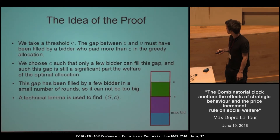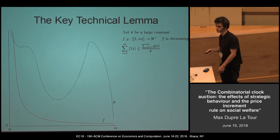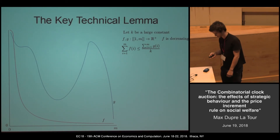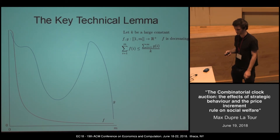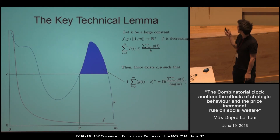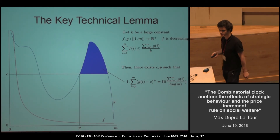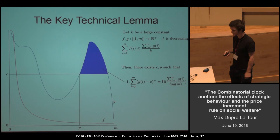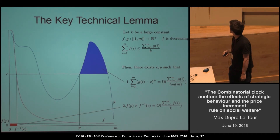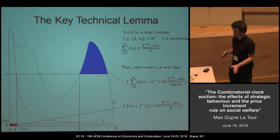This is done using a technical lemma that may be interesting on its own — it is purely analytical. We have two functions F and G such that F is decreasing and the sum of F is at most a K-fraction of the sum of G. The lemma states there exist a pair (C, P) such that the sum of G minus C from P to M is at least a log fraction of the whole sum of G, and F(P) times (F minus 1)(T) is at most a K-fraction of the sum of F. This is the technical core of the paper.